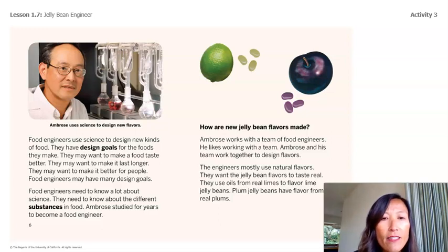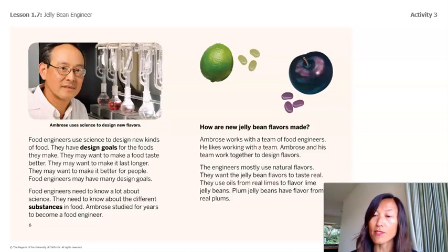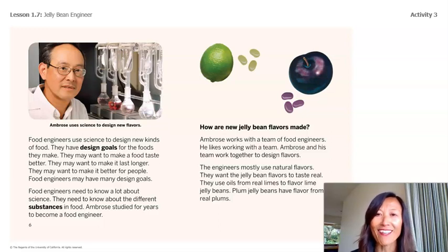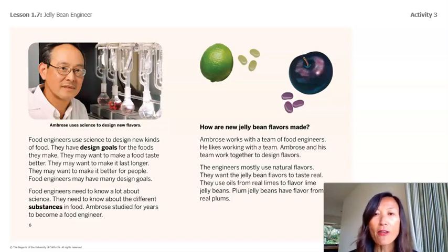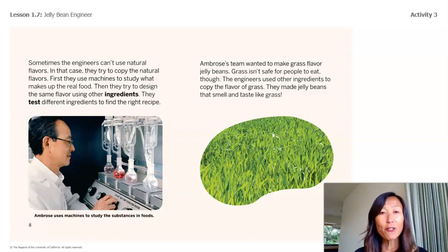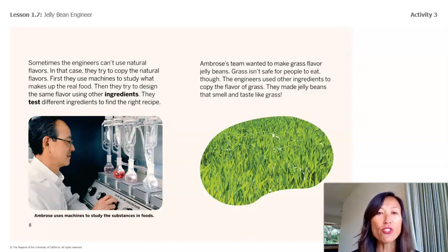Food engineers need to know a lot about science and about the different substances in food. How are new jelly bean flavors made? Ambrose works with a team of food engineers. They mostly use natural flavors — they want the jelly bean flavors to taste real. They use oils from real limes to flavor lime jelly beans, and plum jelly beans have flavor from real plums. Sometimes engineers can't use natural flavors, so they use machines to study what makes up the real food and then try to copy the flavor using other ingredients.